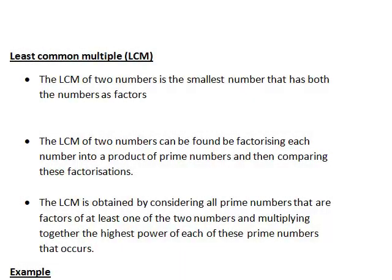In this recording we look at how to find the least common multiple, or LCM, of two numbers. The least common multiple is the smallest number that has both of the original numbers as factors — that is, it is the smallest number that is divisible by both of the original numbers.